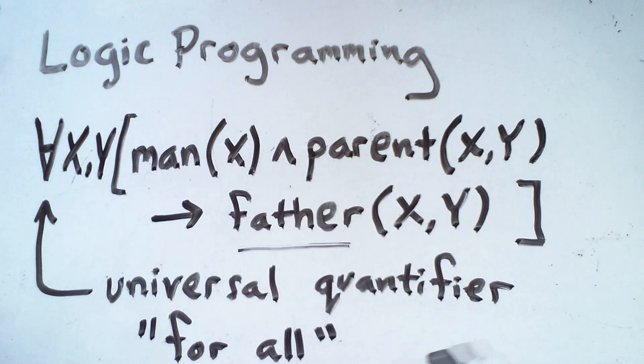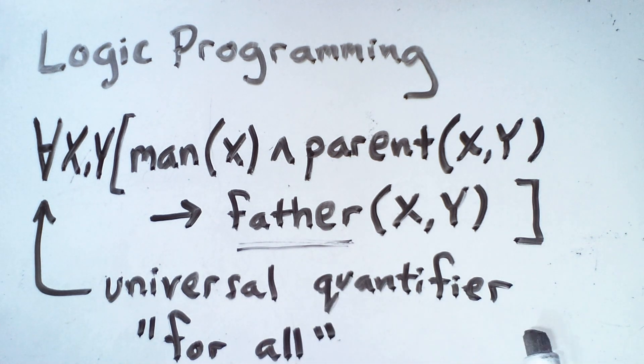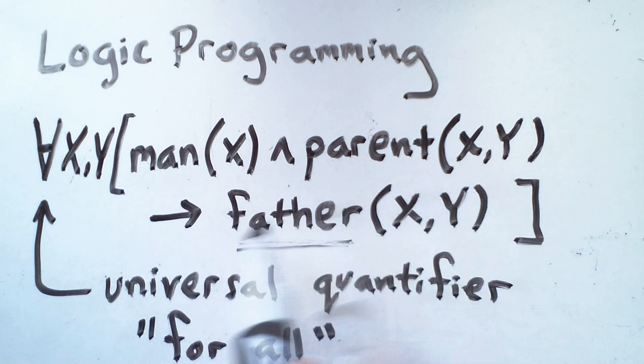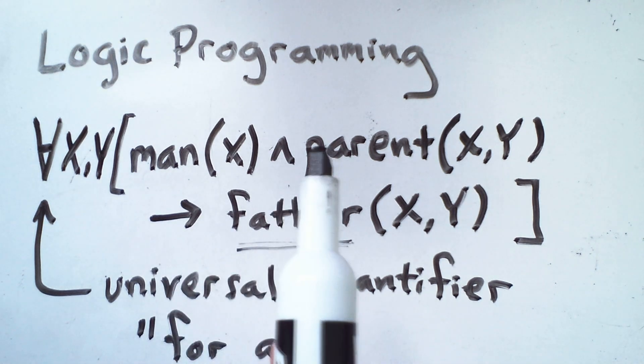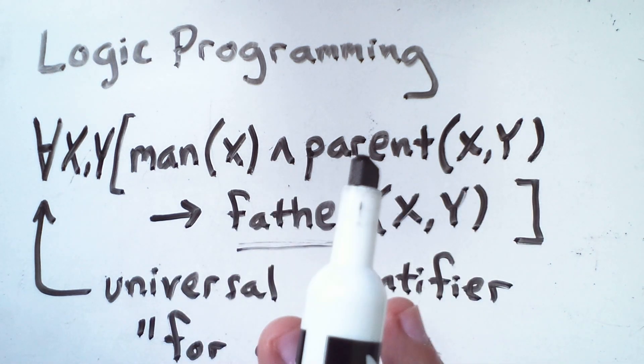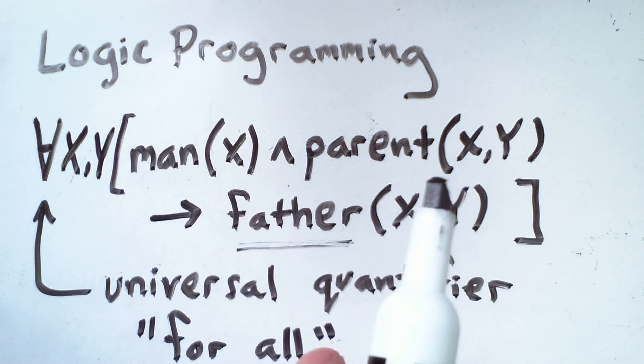In logic programming, we generally define predicates as opposed to defining procedures or functions. Now, even though this is a valid sentence in predicate logic, this is not the form that we would see things expressed in in an actual logic programming language. The details vary by language, but typically the forms of logical sentences that are allowed are restricted to a specific form known as a horn clause named after the logician Alfred Horn.